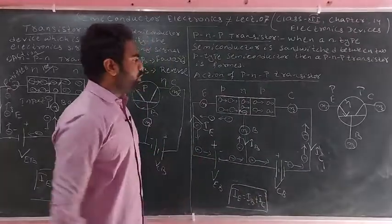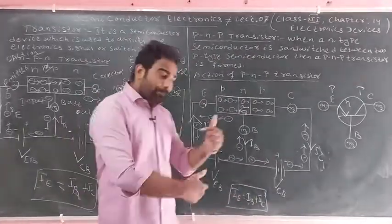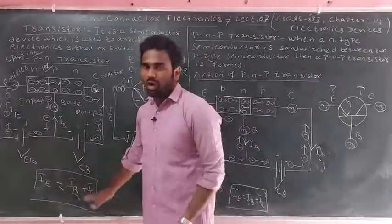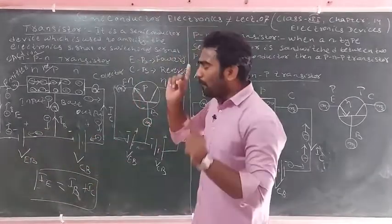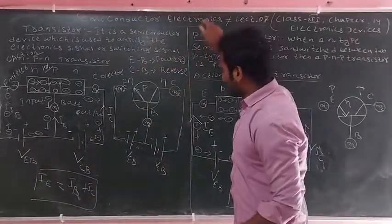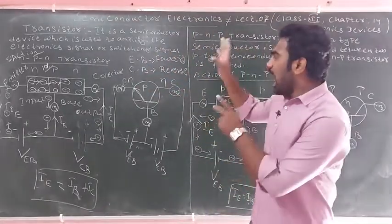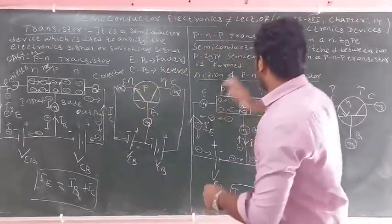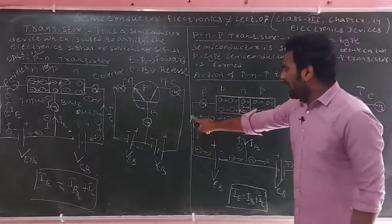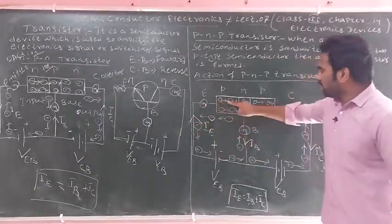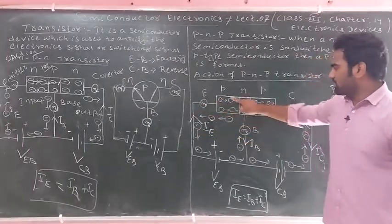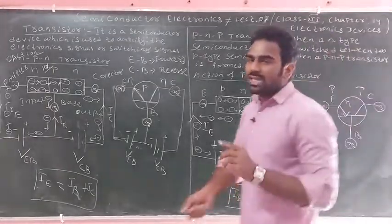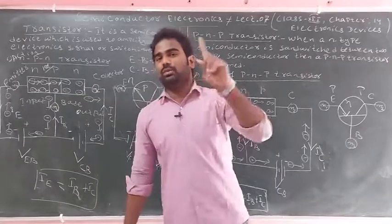To understand transistor action, remember the key formula: I_E = I_B + I_C — the emitter current equals the sum of base and collector current. You can study the NPN transistor symbol and current direction, and the PNP transistor current direction at the emitter base. Please like this video and subscribe to the channel. Thank you.